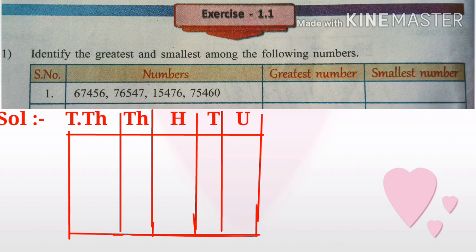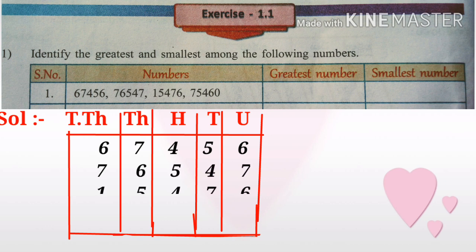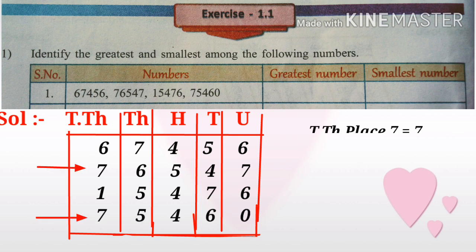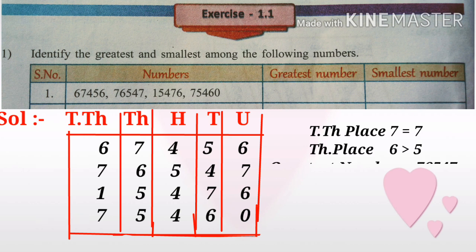Exercise 1.1: Given a set of numbers, we have to find the greatest and smallest numbers. First, write the given numbers' digits in their place values exactly. Now compare the ten thousands place — we observe that 7 equals 7, so those two digits are equal. Then compare the next place.